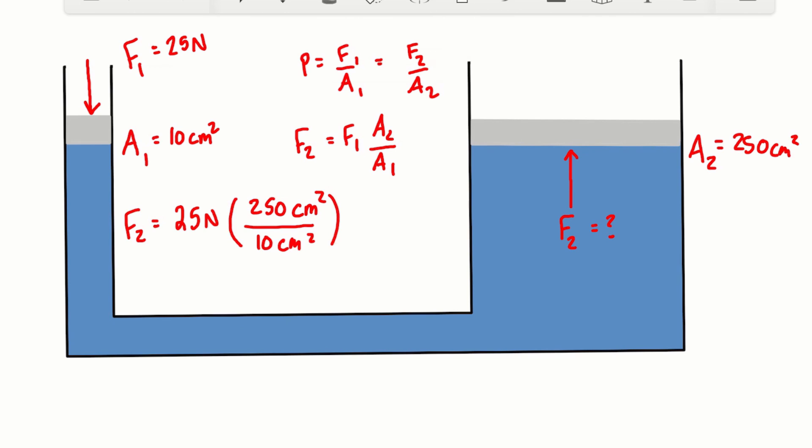And we're going to find actually that the centimeters squared cancel out, and this ratio is just a unitless number. And so 25 newtons times 250 over 10 is equal to 625 newtons.